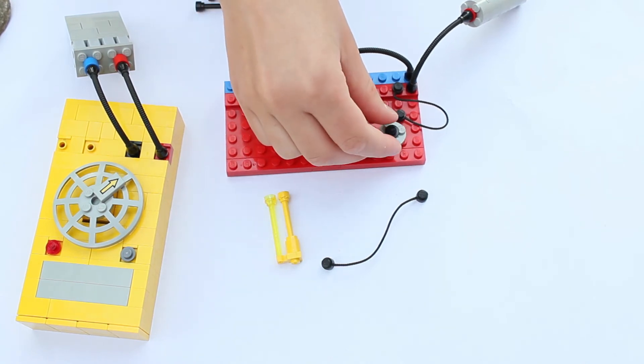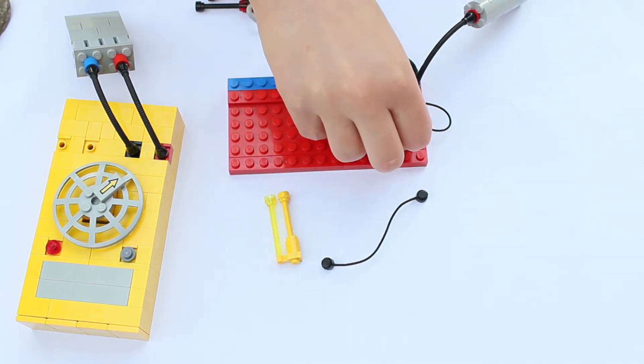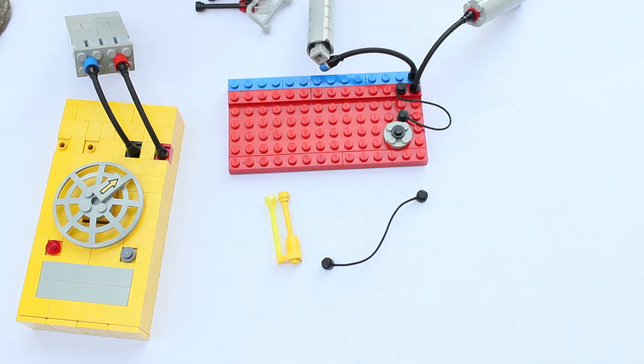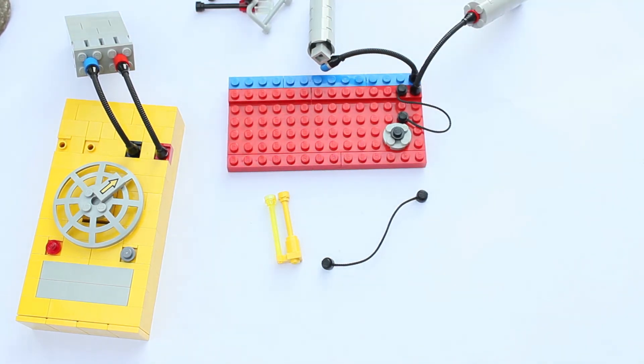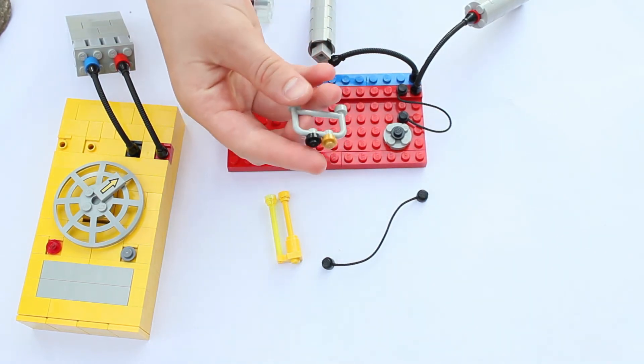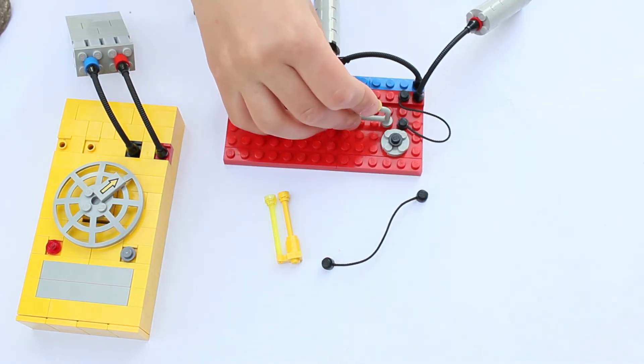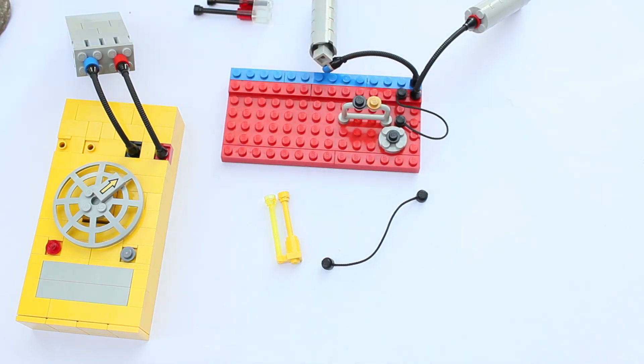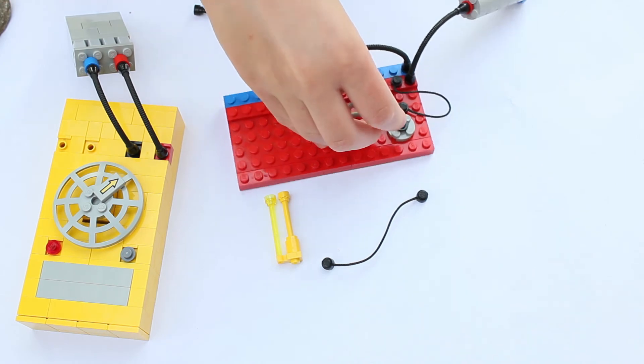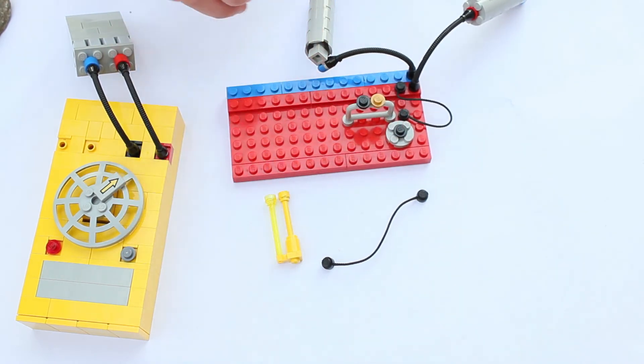This button we're going to stick right there. So now that button has power in it. Now we're going to put this resistor. The resistor, it's important to always stick it like this. If it's not like that, it will not work. So there the resistor is put in correctly.